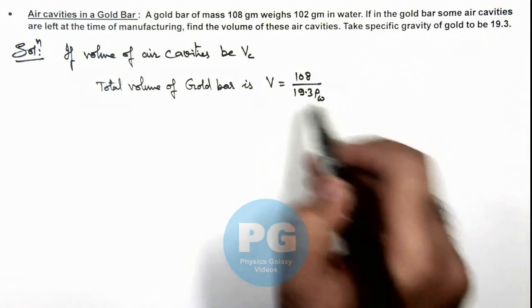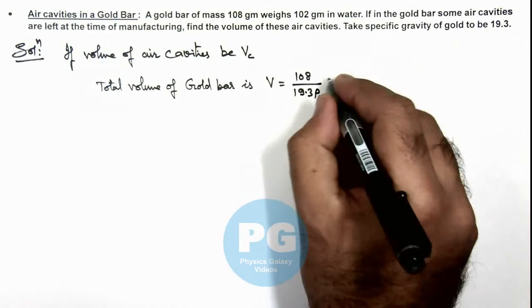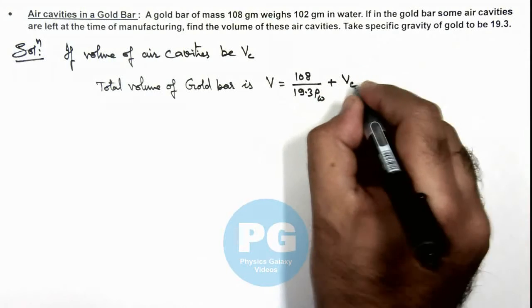The density of gold can be taken as 19.3 ρw, plus volume of cavities.